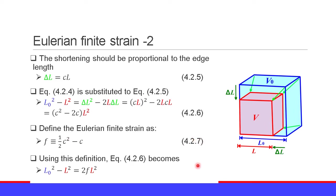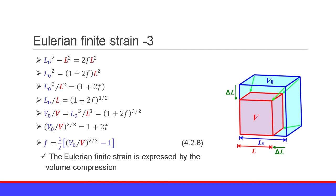We define the Eulerian finite strain as f equals (1/2)(C squared minus C). Equation 4.2.7. Using this definition, equation 4.2.6 becomes L0 squared minus L squared equals 2f times L squared. Modifying this equation and considering V0 over V, we obtain V0/V to the 2/3 power equals 1 plus 2f. Therefore, the Eulerian finite strain f equals (1/2)[(V0/V)^(2/3) minus 1]. Equation 4.2.8. Thus the Eulerian finite strain is expressed by volume compression.